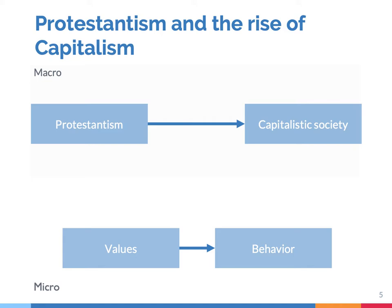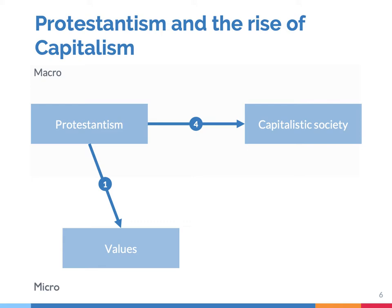In this work, Weber linked the macro level to the micro level — this is arrow 1. He argued that with the rise of protestantism, people's values changed. In protestant societies there is a stronger emphasis on working hard and on saving money. And Weber then argued that these values changed people's behavior — that's arrow 2. People started to work hard, they started to save more money, and so forth.